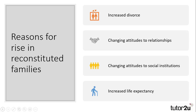In previous videos we've looked at the reasons for increased divorce, and one factor behind the increase in reconstituted families is the increase of divorce. Many reconstituted families are formed from the separation or divorce of a previous relationship. Another factor is the changing attitudes to relationships, with the movement in society from lifelong relationships to serial monogamy. Another reason is the changing attitudes to social institutions, such as family and religion, which also play a part. Whilst our increased life expectancy means we are more likely to form several long-lasting relationships over our lives instead of one lifelong relationship, and this includes reconstituted families.